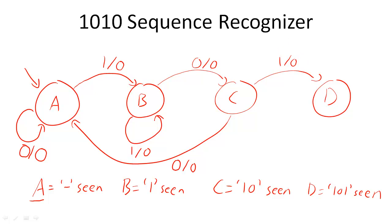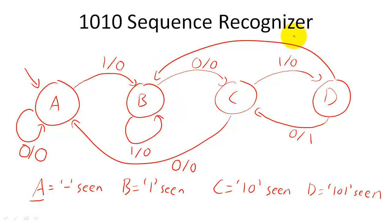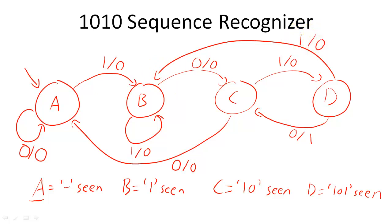For the fourth state, if we receive a 0, we have seen the desired input sequence. Because we have now also seen the beginning of another desired sequence, we transition back to the state that records that we have seen 2 bits of the desired input sequence. If we receive a 1, we have failed to find the sequence, but we have seen the first bit of the sequence starting over. Since we need no more new states, and all of our states have a state transition for every possible input value, we will have completed our state diagram once we add a key for interpreting the state diagram.